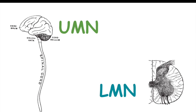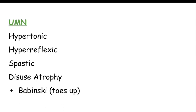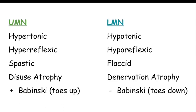Let's look at a broad overview of the symptoms or clinical features of upper motor neuron lesions and lower motor neuron lesions. Upper motor neuron lesions cause hypertonic muscle, hyper-reflexic reflexes, spastic muscles, disuse atrophy, and a positive Babinski sign. However, lower motor neuron lesions have hypotonic muscle, hyporeflexic reflexes, flaccid paralysis, and denervation atrophy.